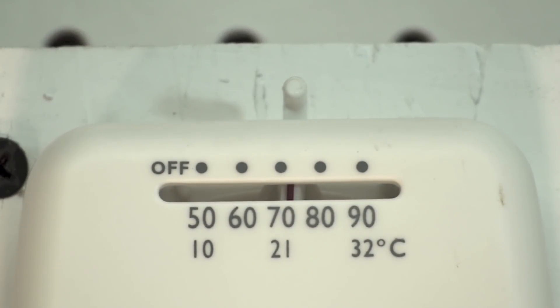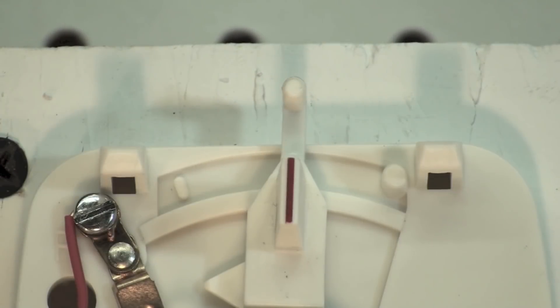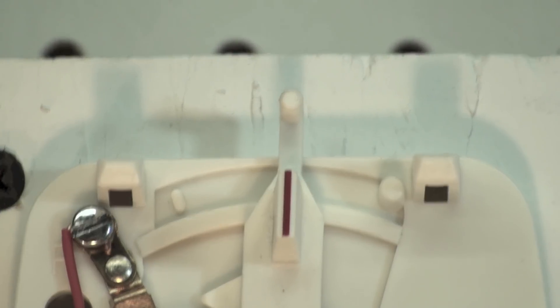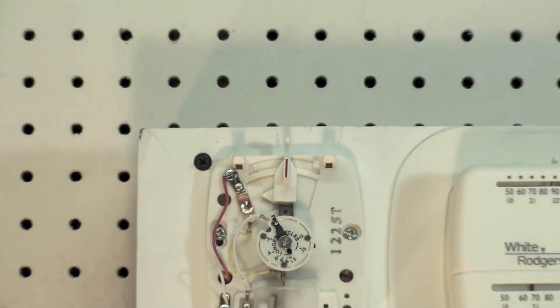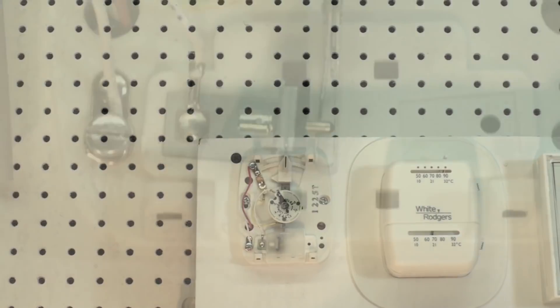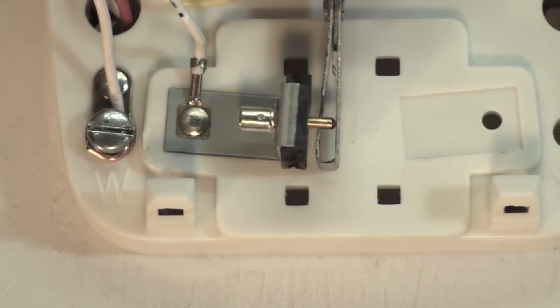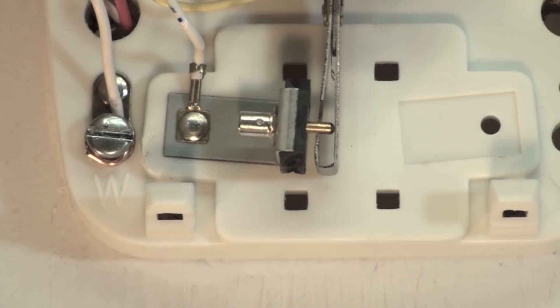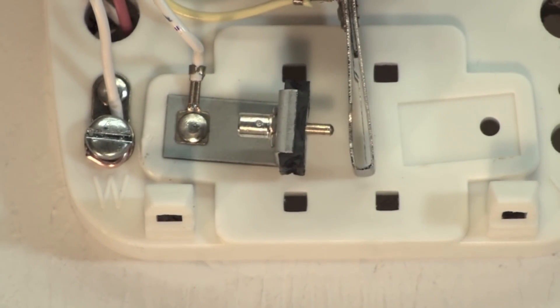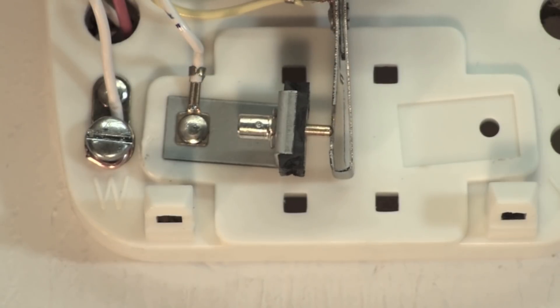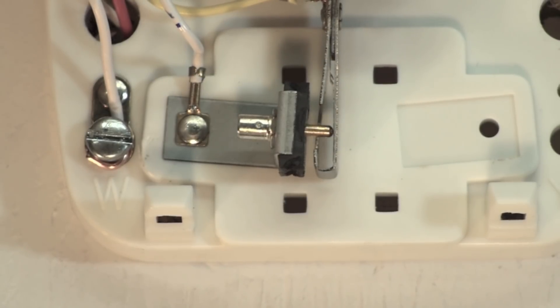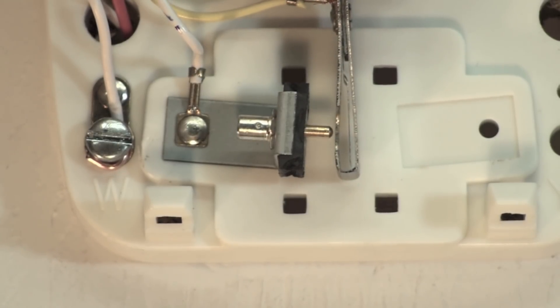Obviously Celsius on the bottom and Fahrenheit on the top. There's a close-up of the switch. This is called a snap action switch. As I turn the temperature down it pops loose, as I turn it up it pops over. All switches like this have to have some sort of quick make so that they don't arc.